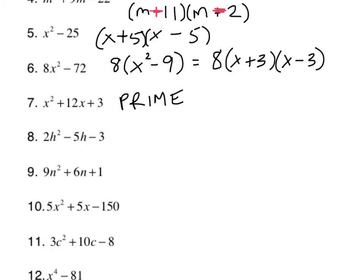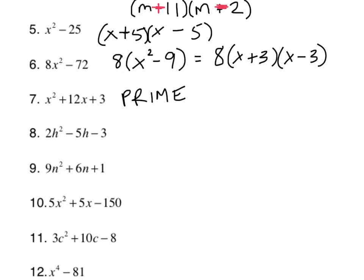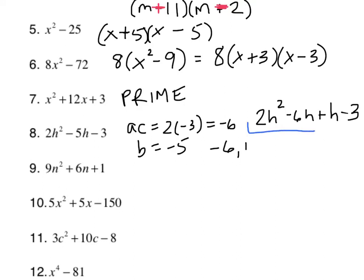All right. Next one. 2h squared minus 5h minus 3. No GCF. Okay. So find factors of ac that add up to b. ac in this case is negative 6. I need factors of negative 6 that add up to negative 5. Well, those would be negative 6 and 1. I apologize for the wind. 2h squared minus 6h plus 1h minus 3.